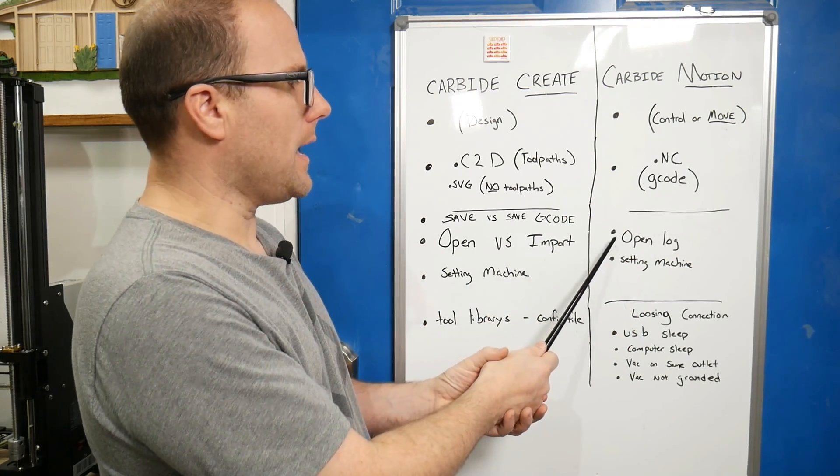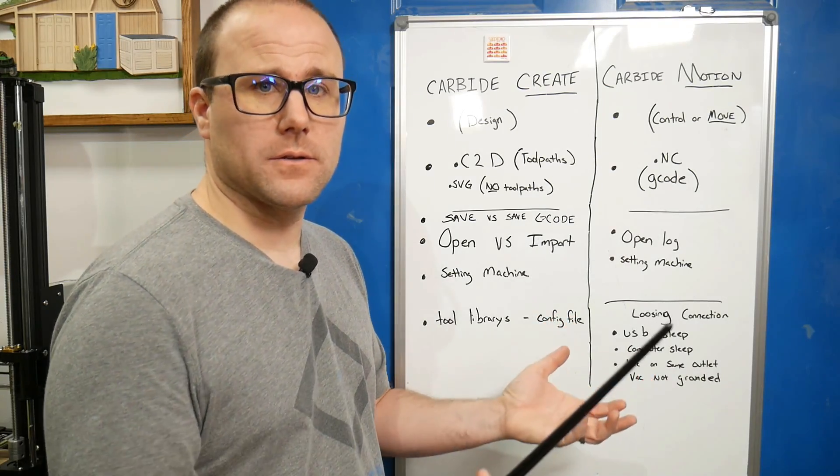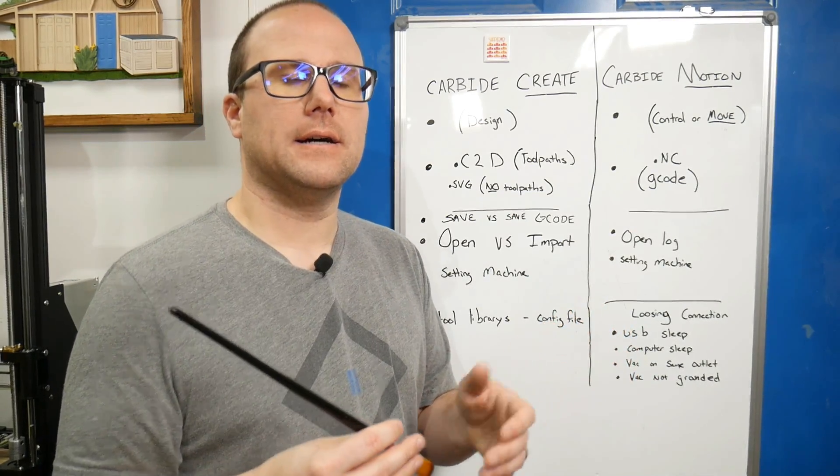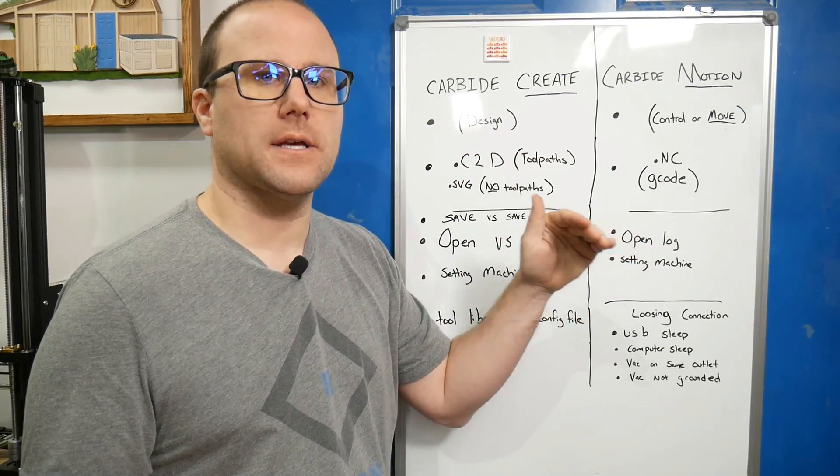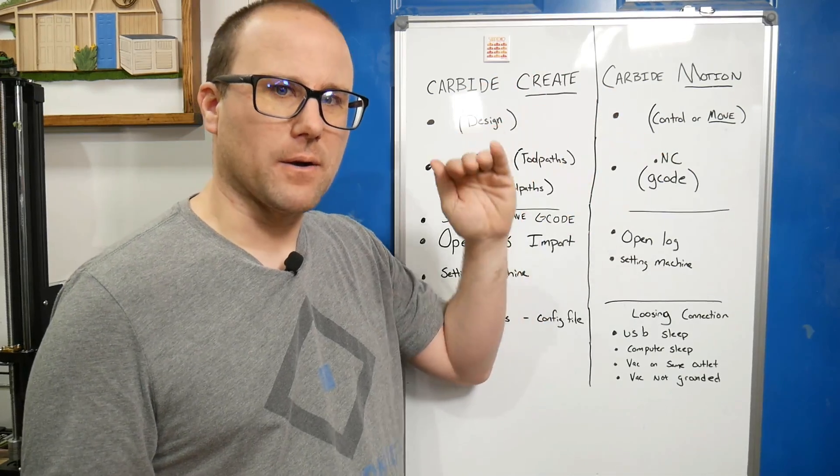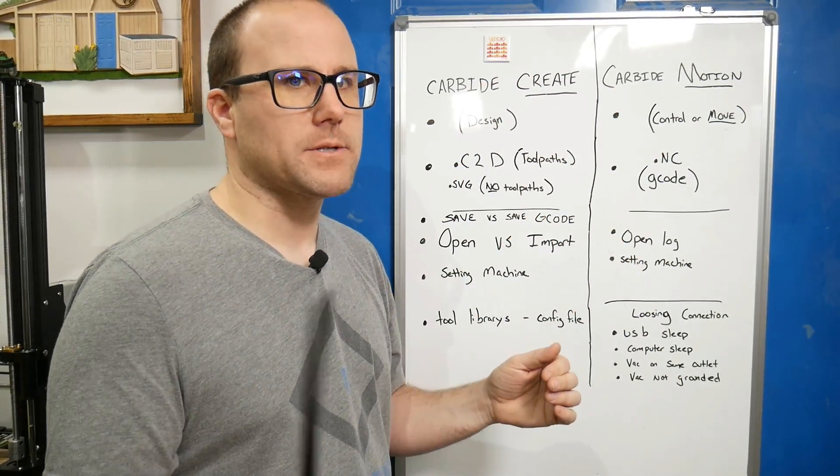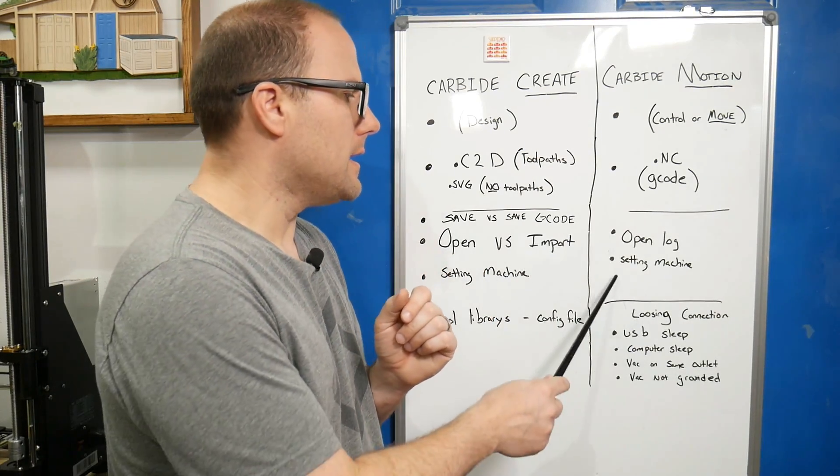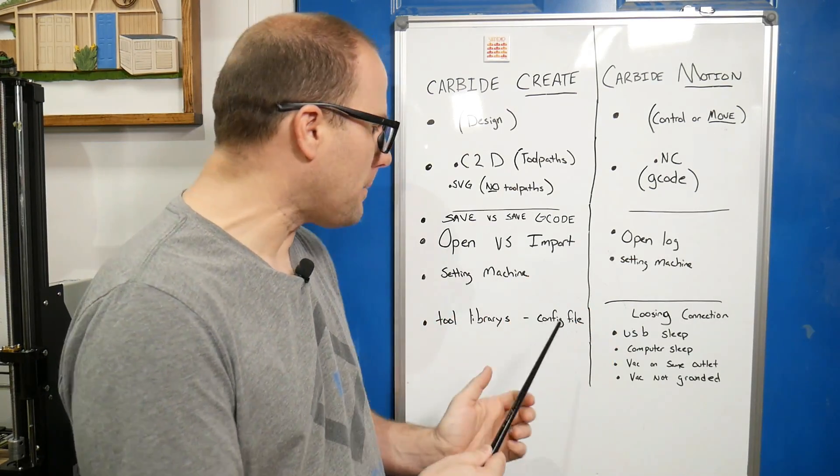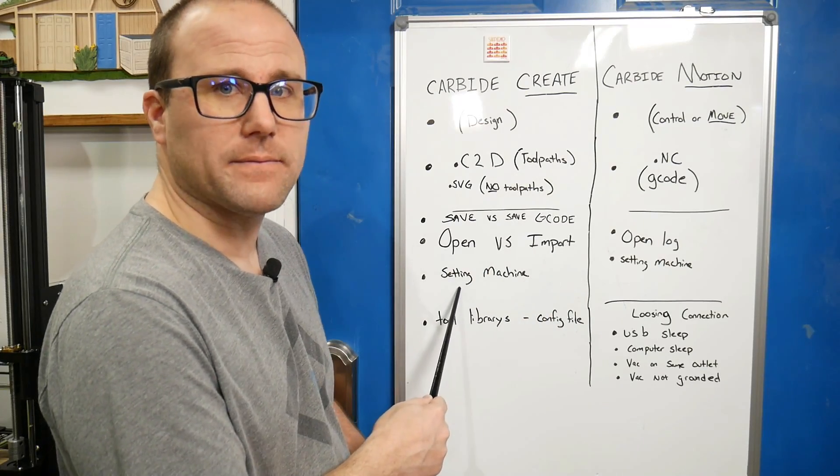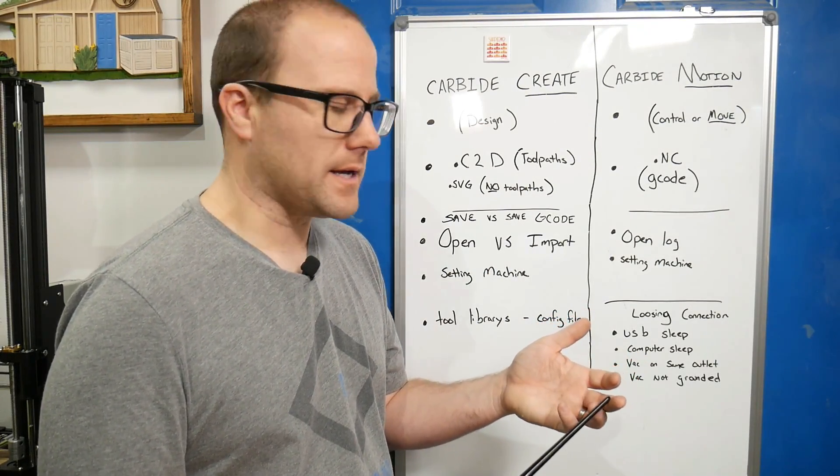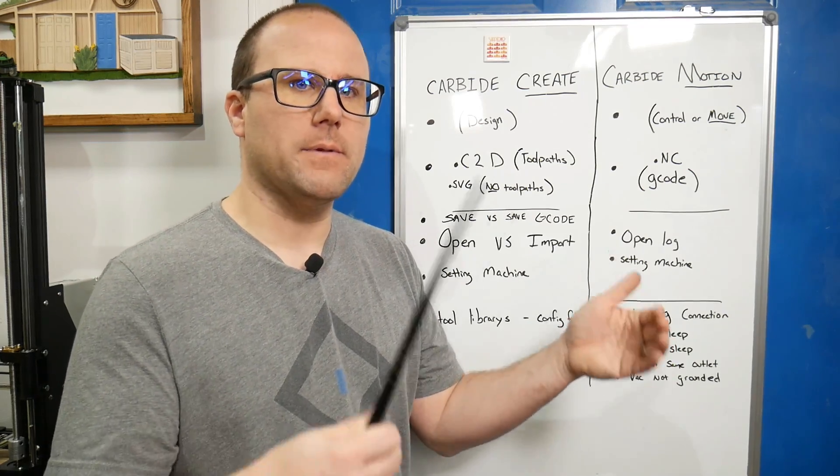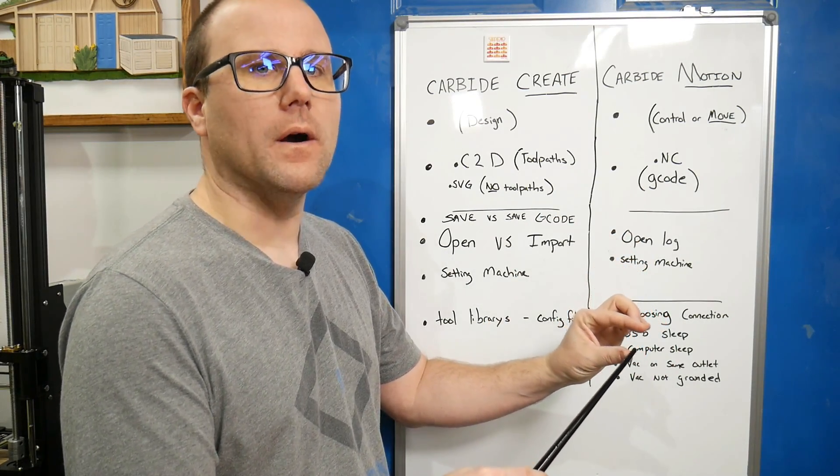Over on Carbide Motion, we have some settings that are atypical. First is open log. If we click that, it will open an internet browser and show what g-code is being sent to the machine. Most of the time you're not going to need to know that. One thing that people get confused with is setting machine. It's a dropdown very similar to Carbide Create showing Shapeoko, Shapeoko XXL, XL, and sometimes Nomad.